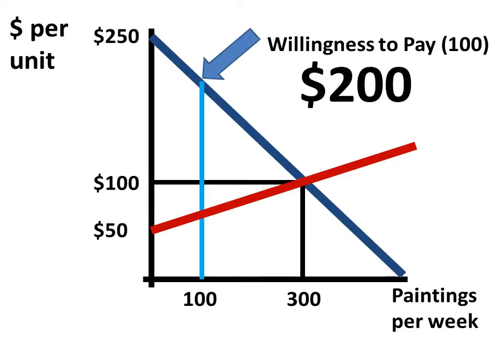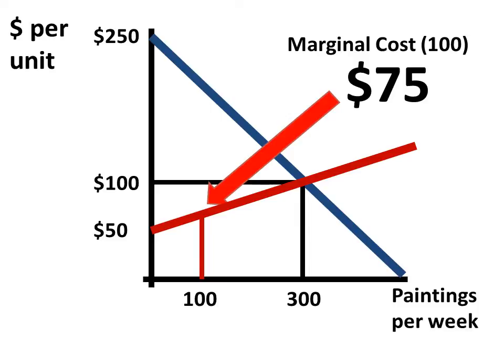So we can think about a particular painting, say the 100th painting. Maybe somebody was willing to pay $200 for that painting, and the cost of producing that painting was $75.